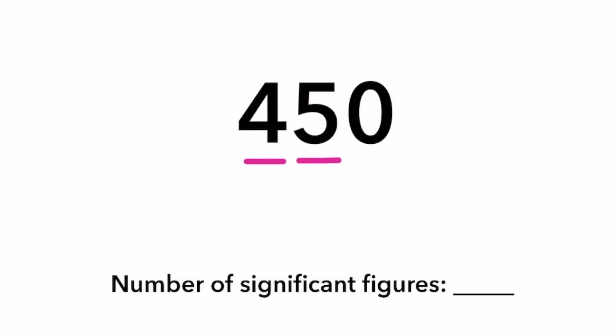Example four: 450. The four and the five are non-zero numbers, and the ending zero is not significant because there is no decimal point. Final answer: two significant figures.